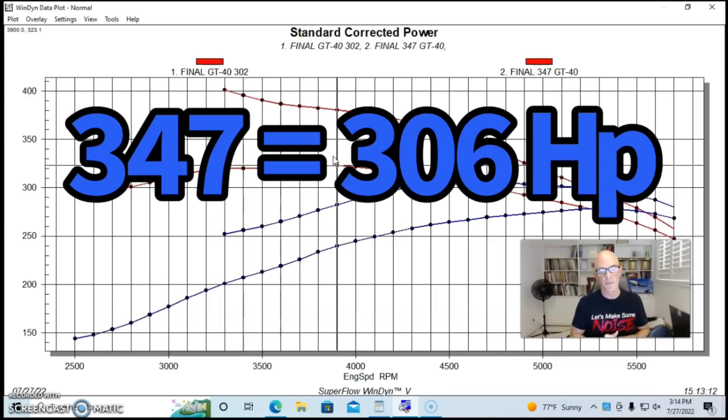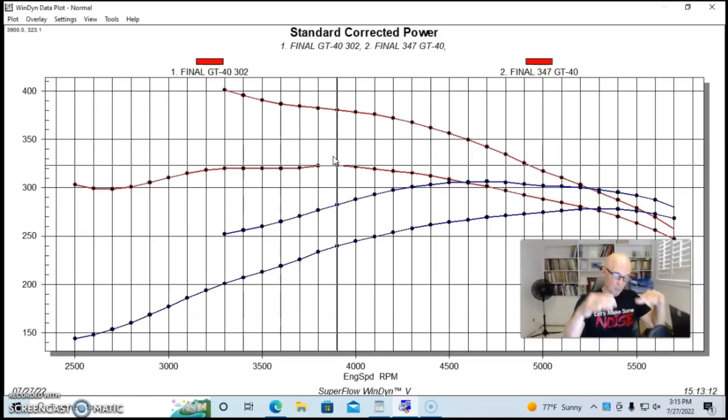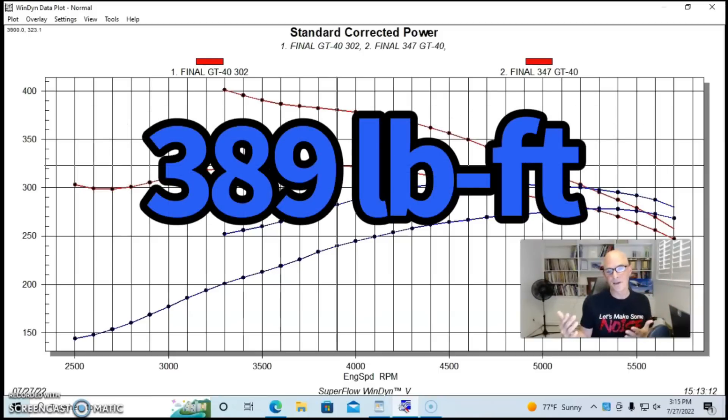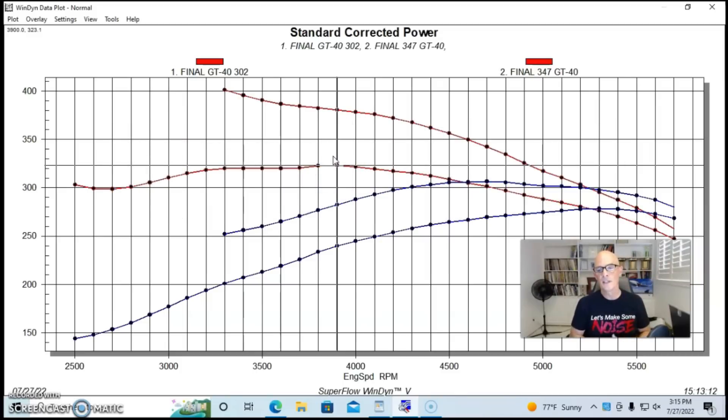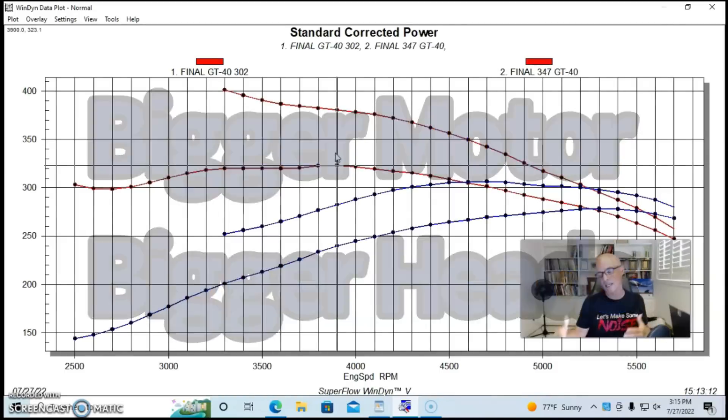Even more so on this 5-liter application, the 5-liter versus the 347, the stock E7TE heads primarily would be the limiting factor. I mean, they only flow 160-ish or so CFM. So even if we were managing to make two horsepower per CFM, which is difficult because we don't have the rest of the stuff to support that, even if we were doing that, you can see that we're limiting the power output. And even more so on the bigger motor, because it needs more airflow, but we're restricting the bigger motor even more with those stock E7TE heads.